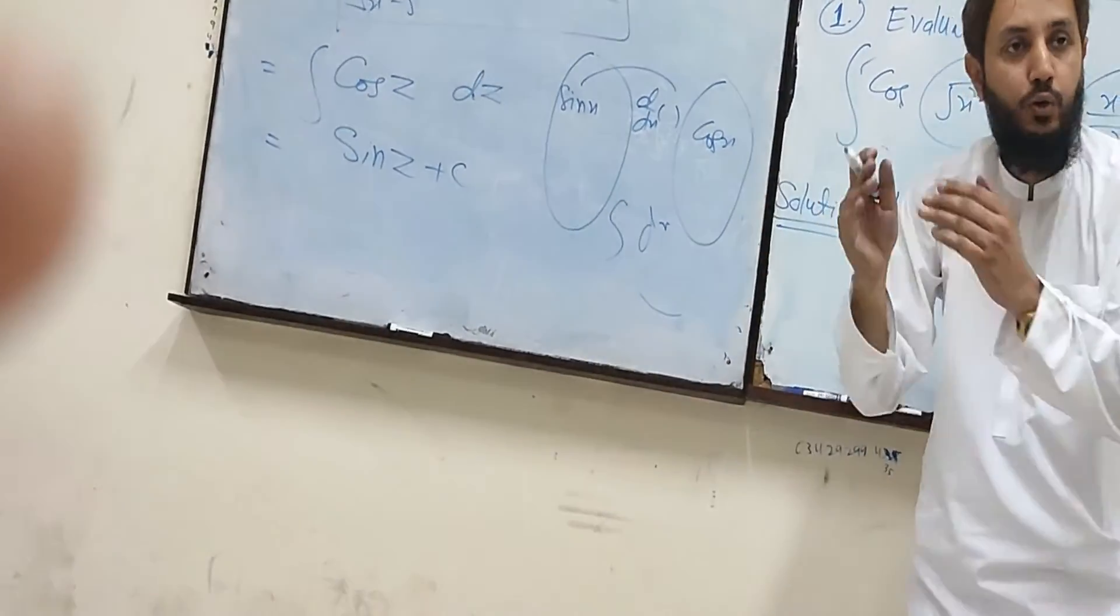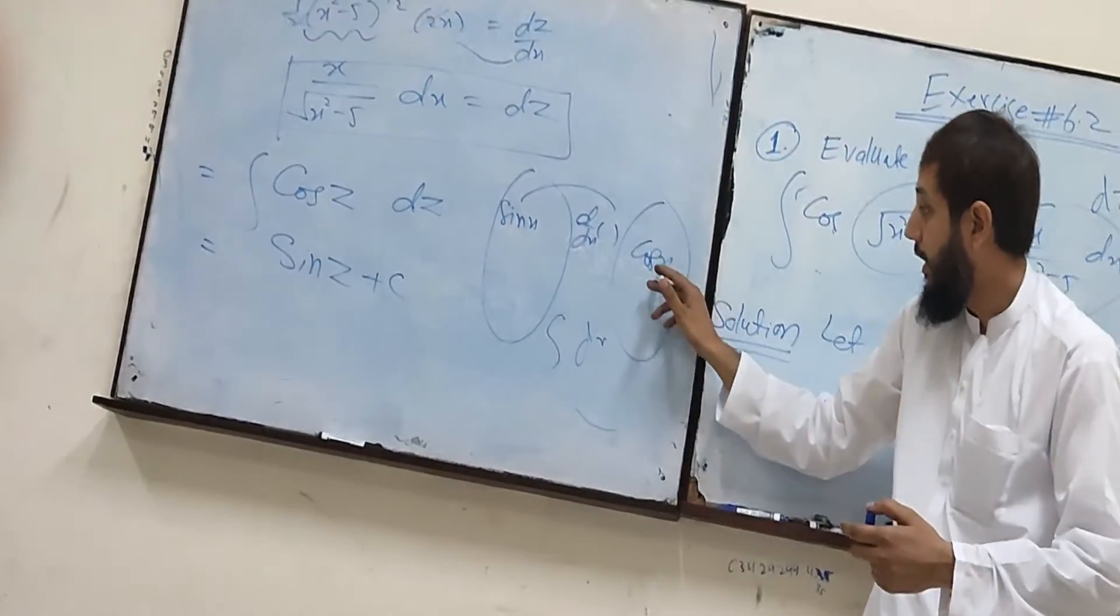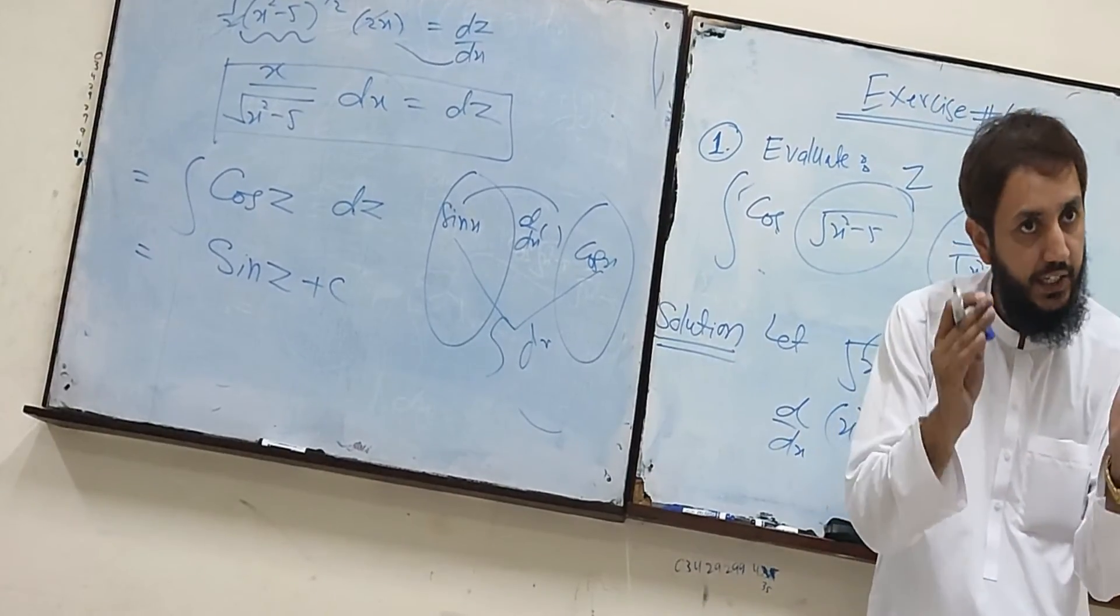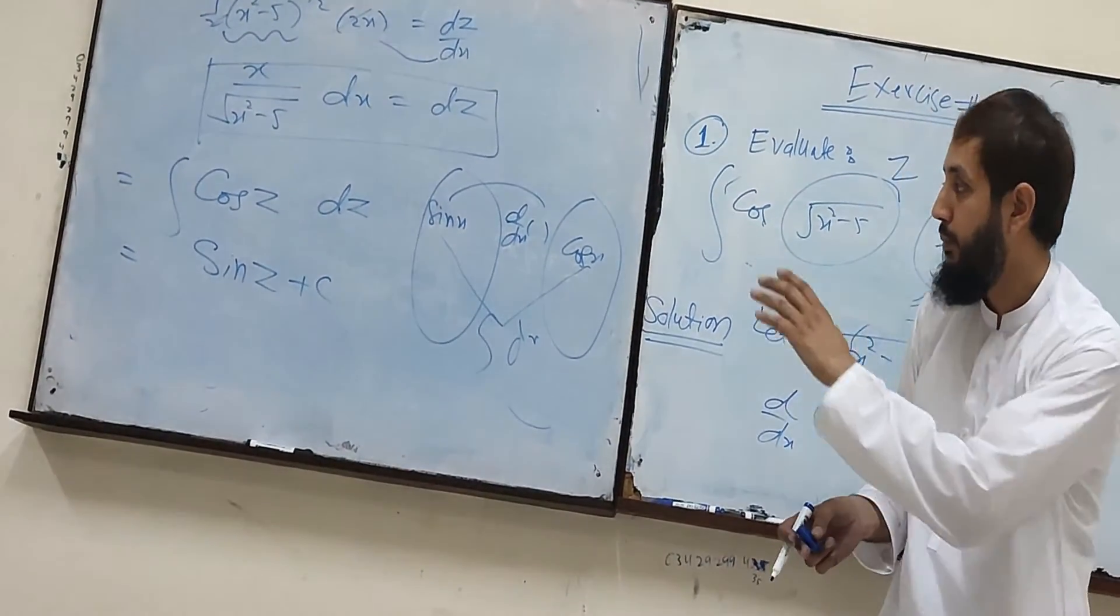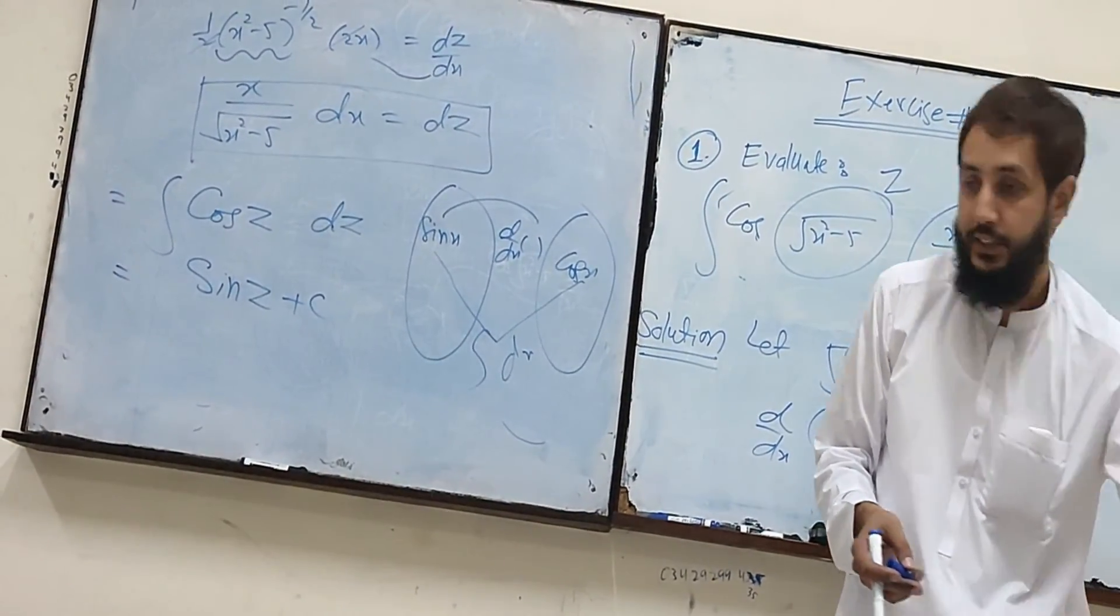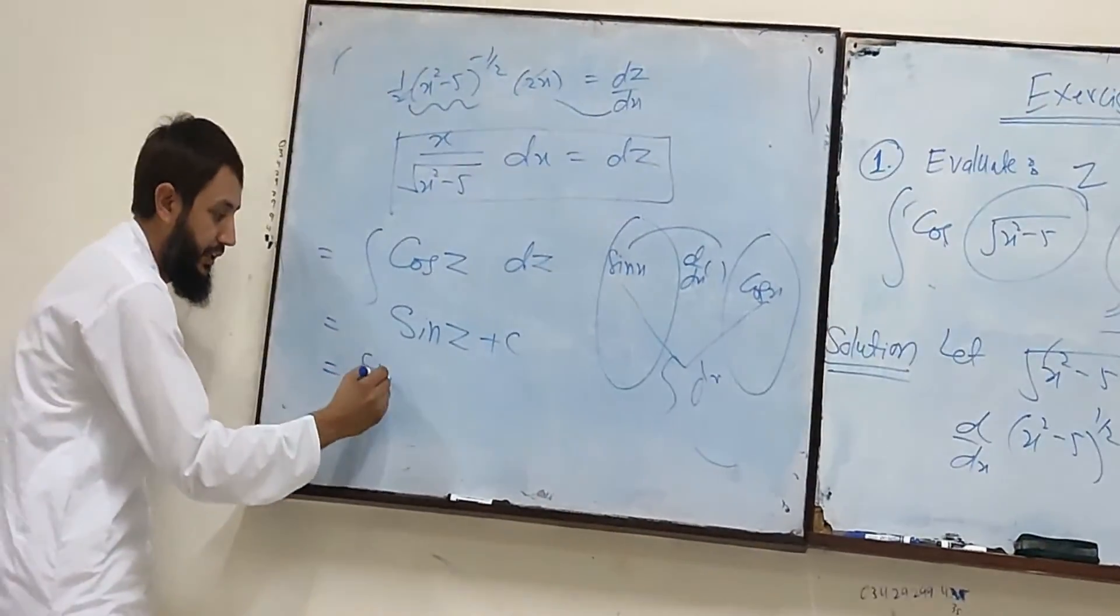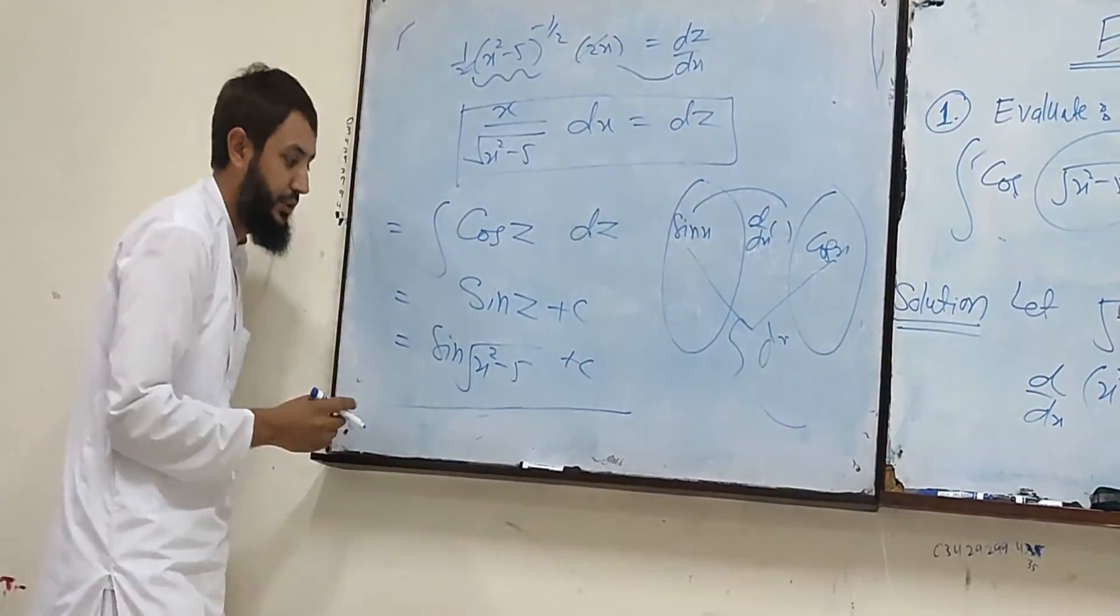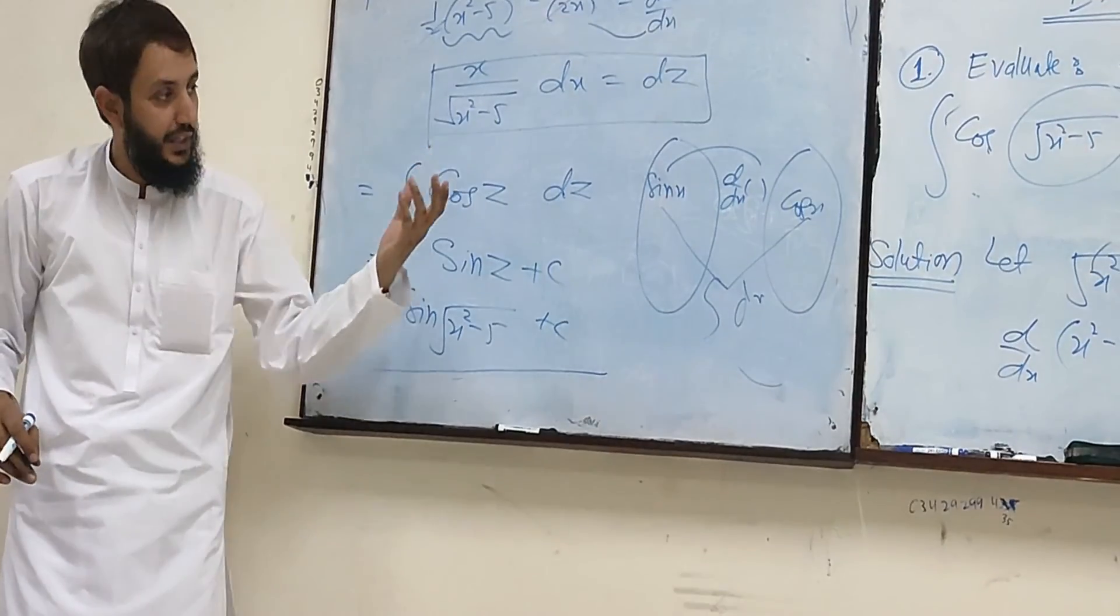So if we have a question, we'll get into the question. So let's see. Sign x square minus 5. What is the case? This is the last time.